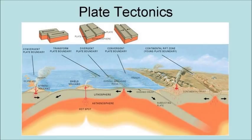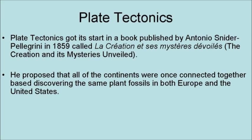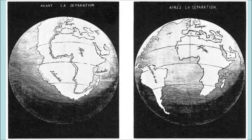When these plates interact, the results are earthquakes and volcanoes. Plate tectonics got its start in a book published by Antonio Snyder-Pellegrini in 1859 called La Création et ses Mystères Dévoilés, translated as The Creation and Its Mysteries Unveiled. He proposed that all of the continents were once connected together, based on discovering the same plant fossils on both sides of the Atlantic. He then found this fossil matching on all of the continents, and proposed that the supercontinent catastrophically broke up, resulting in the flood described in Genesis, the first book of the Bible. The catastrophic nature of the process went against uniformitarianism, and so this early version of plate tectonics got little support at the time.